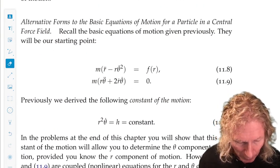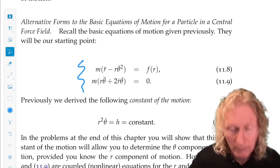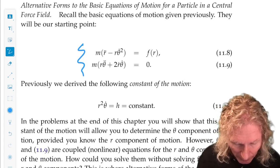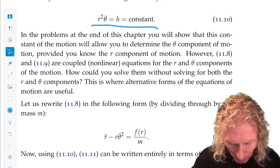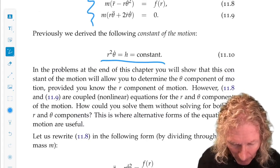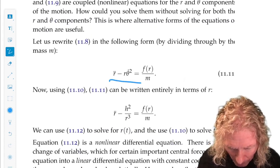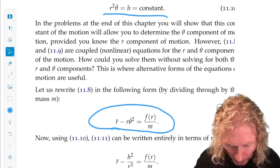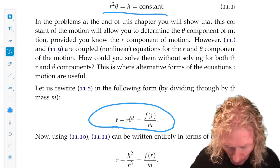We've already derived equations of motion for a particle of constant mass m in a central force field, and we derived this constant of the motion. One of the ways we can use that constant of the motion is to rewrite this equation in this form, just bringing the m over to the right-hand side, and using the fact that theta dot squared would be h squared over r to the fourth.